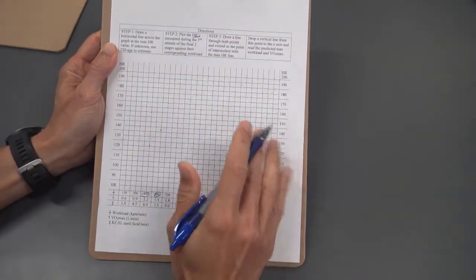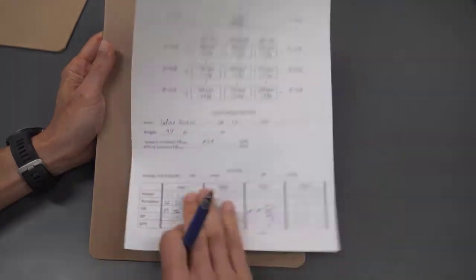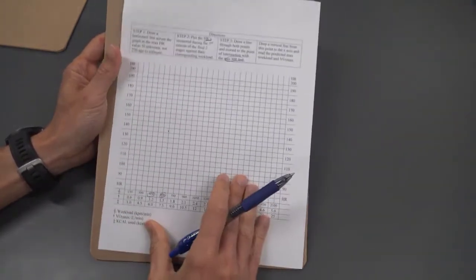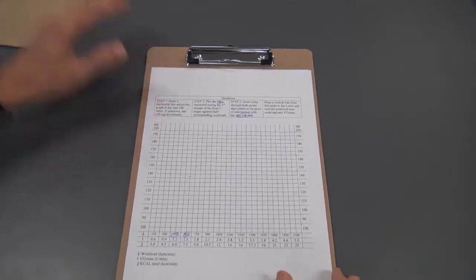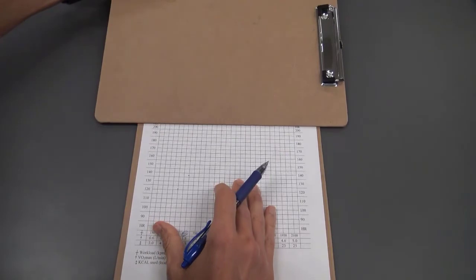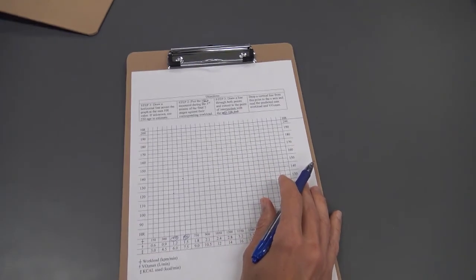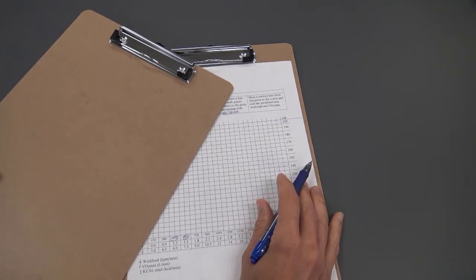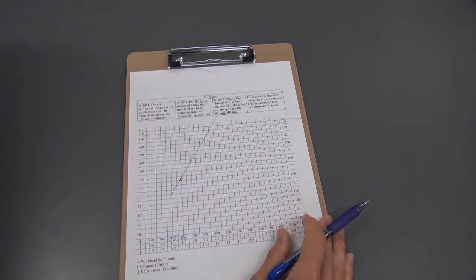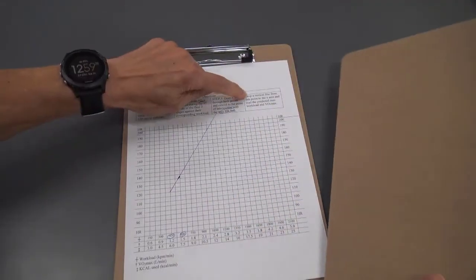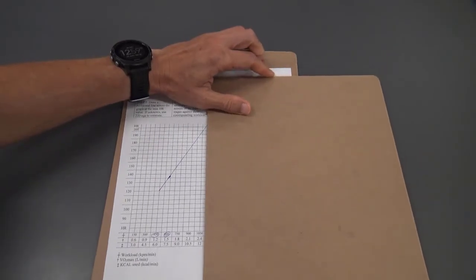Now that we have our heart rates plotted, we need to draw a line that corresponds to our client's estimated maximal heart rate. Remember we used the formula 220 minus age to estimate our client's maximal heart rate, which came out to 202 beats per minute. You can use a straight edge of any kind to draw your lines, I'll use this extra clipboard I have lying around. So I see the 200 mark, and I'll draw a line all the way across the top of the page just above that point. Now all we do is take straight edge and line it up with the heart rates that you have plotted from the two consecutive stages, and draw your line all the way up through the estimated heart rate max. The final step is to put your straight edge vertically across the sheet at the submaximal and maximal heart rate intersection point. Draw a line from the top all the way down to the bottom. Make sure this line is parallel with all the other vertical lines on the graph.